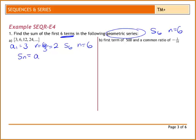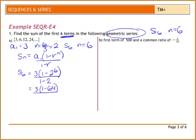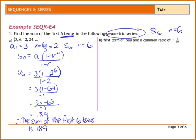Sn equals A1 times 1 minus r to the n all over 1 minus r. So S6 is going to be 3 bracket 1 minus 2 to the power of 6 all over 1 minus 2. That becomes 3 bracket 1 minus 64 all over negative 1. So I have 3 times negative 63 all over negative 1, which gives me 189. Finish with a therefore statement. So you've got the sum of the first six terms is 189.